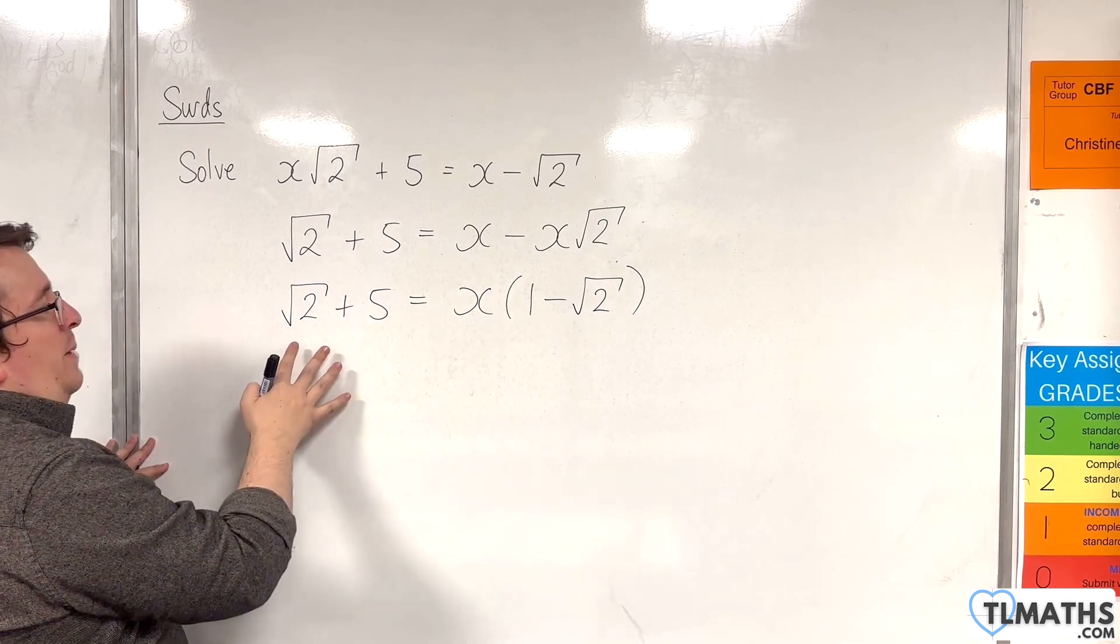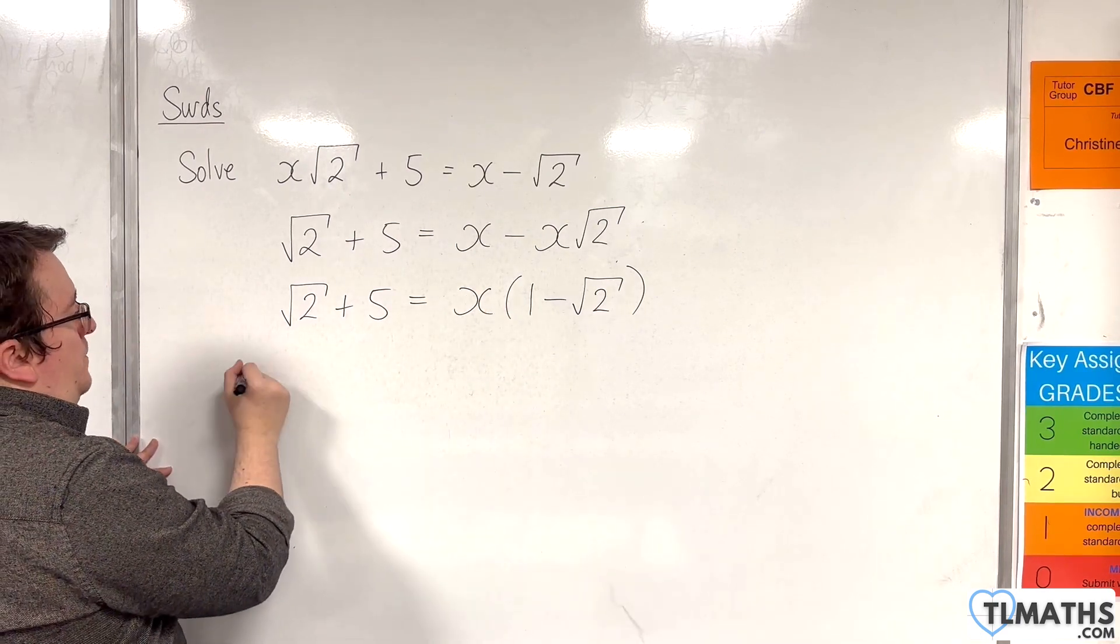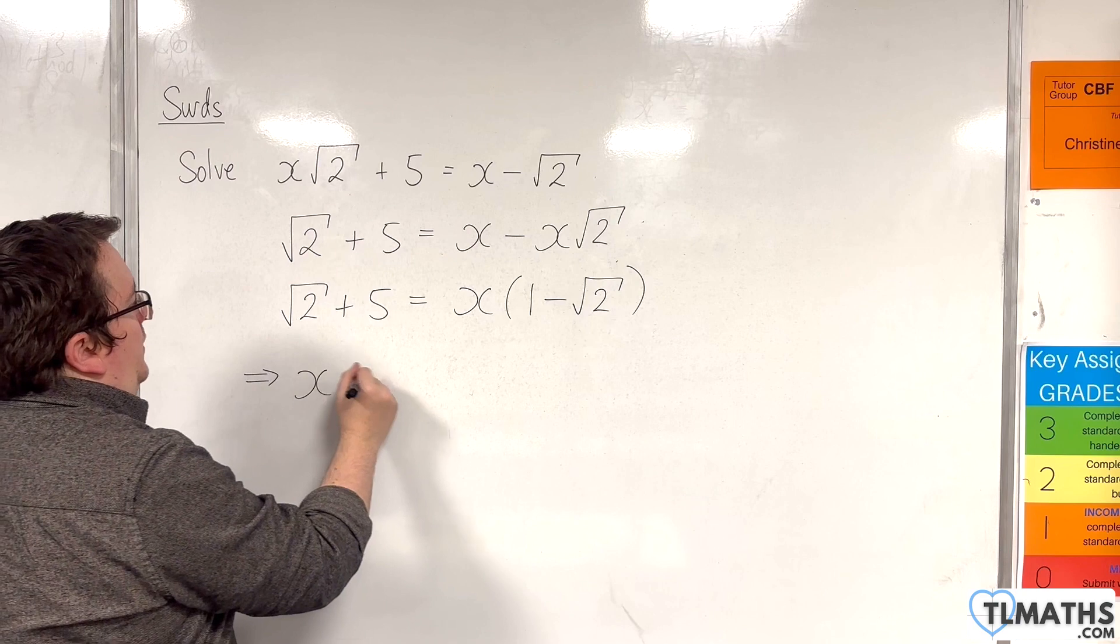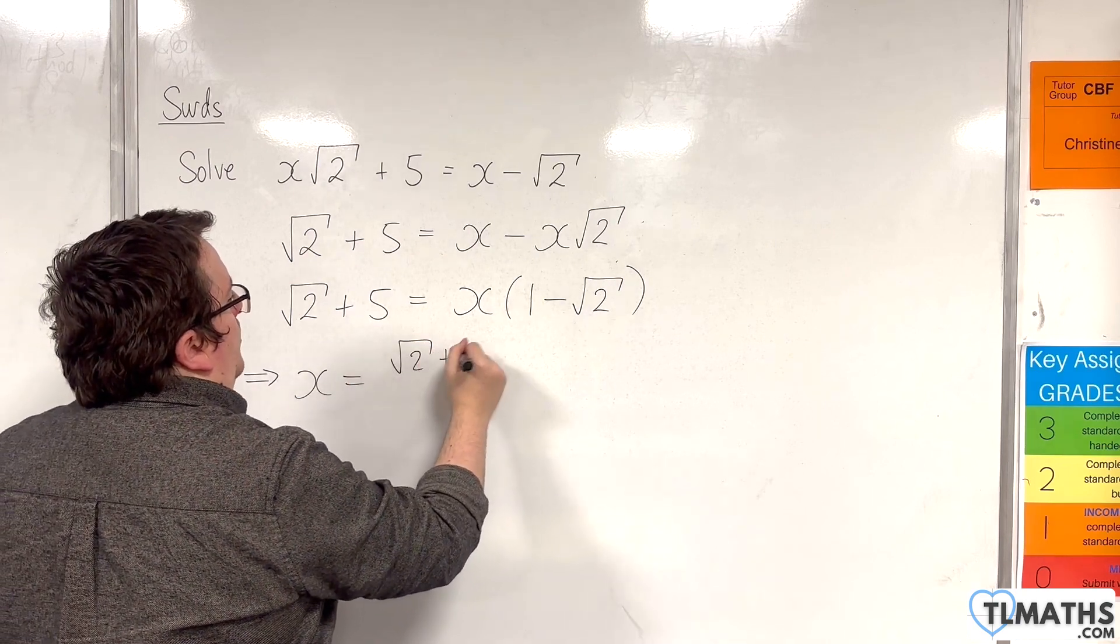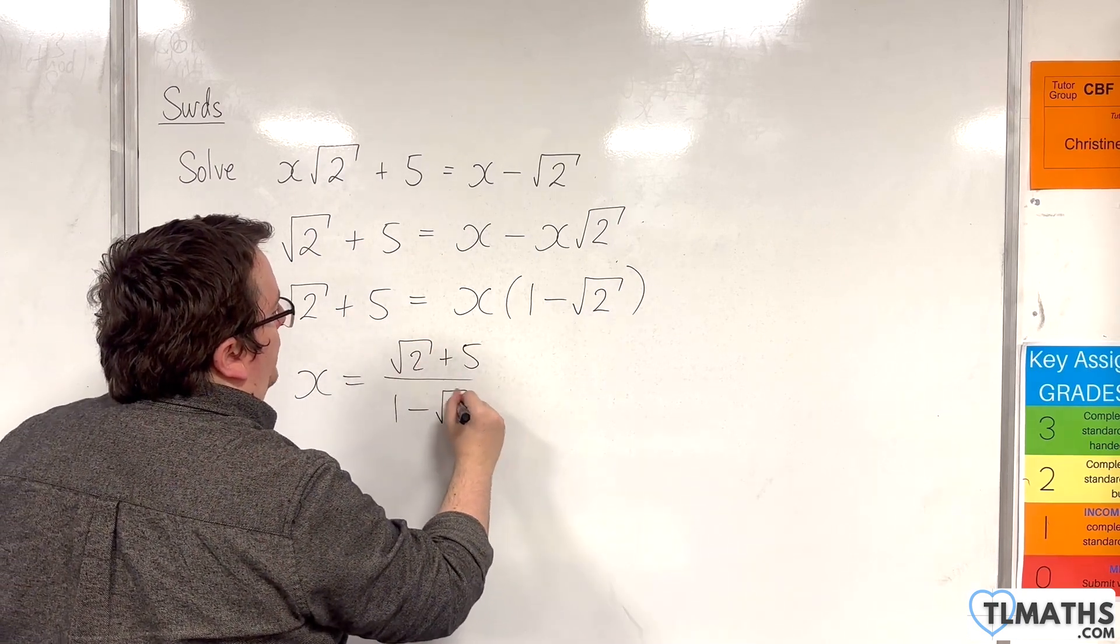And then I can divide both sides by the 1 minus √2. So we'll have x equals √2 plus 5 divided by 1 minus √2.